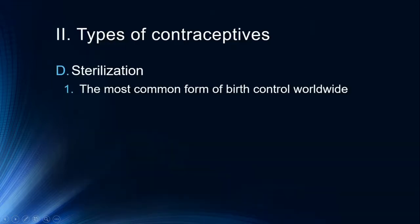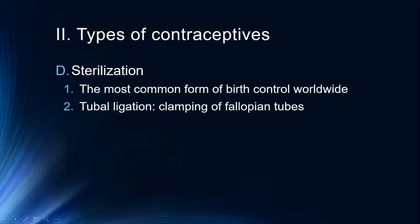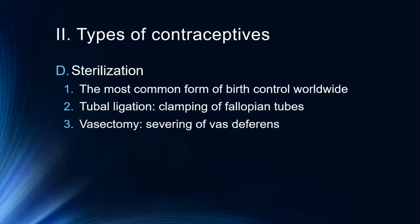Sterilization is the most common form of birth control worldwide. In women, this generally involves tubal ligation, which is the clamping off of the fallopian tubes — people refer to this as getting their tubes tied. It is highly effective in preventing pregnancy. Vasectomy is the severing of the vas deferens in males, which prevents sperm from reaching the ejaculate, and is also very effective. There are occasional cases where these were not done effectively, but generally sterilization is highly effective — virtually about 100%.